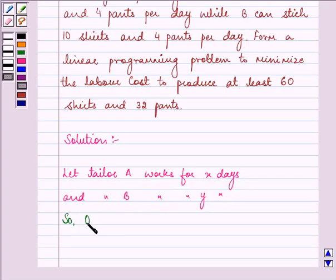So our LPP is to maximize Z, that is 150X plus 200Y, as A earns 150 whereas B earns 200 per day.